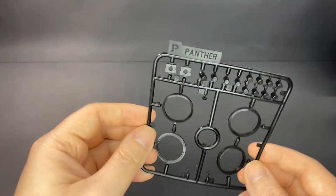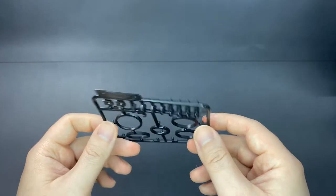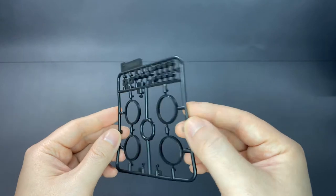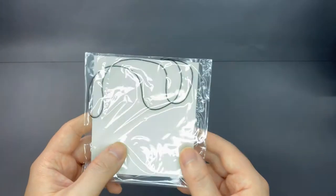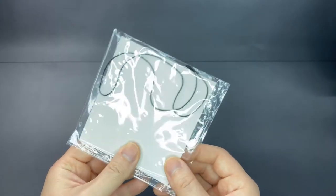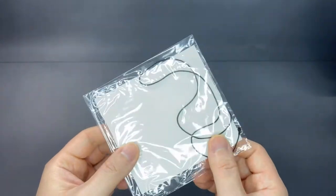Sprue P is made of rubber, mainly the polycaps and seals for the wheels. They have also included a little string to act as the tow rope. I will definitely be replacing this with a proper metal cable.